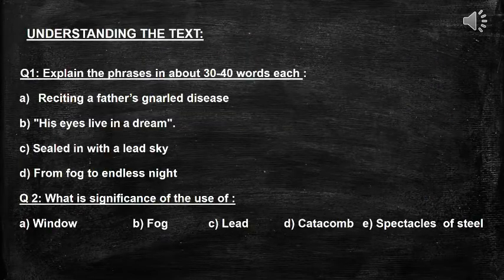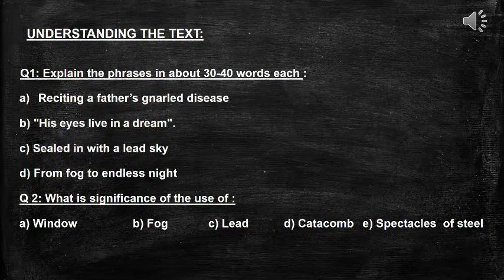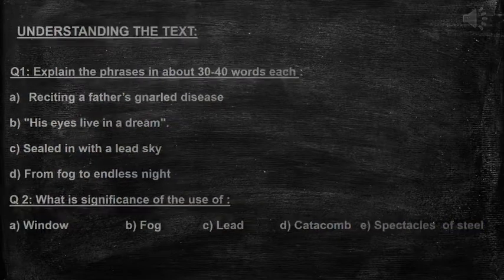Now try to evaluate yourself by answering the following questions — explain these phrases in about 30 to 40 words each: 'reciting a father's null disease,' 'his eyes live in a dream,' 'sealed in with the lead sky,' 'from fog to endless night.' Also tell what is the significance of the use of 'window,' 'fog,' 'lead,' 'catacomb,' and 'spectacles of steel.' That's all in this video. Hope this answers all your queries. Keep learning, keep practicing. Thank you.